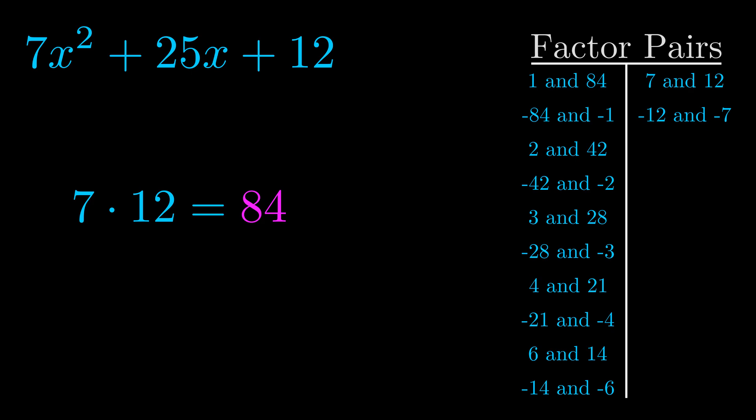The b value is the coefficient on the x term, that's the middle term, the one that we haven't done anything with yet. And really this is the only factor pair that we need.